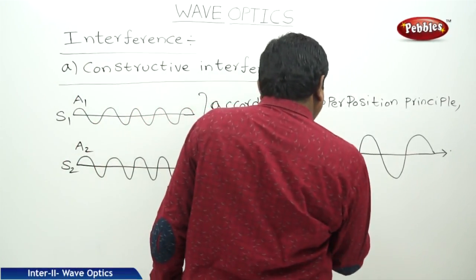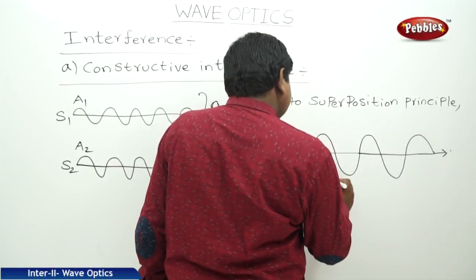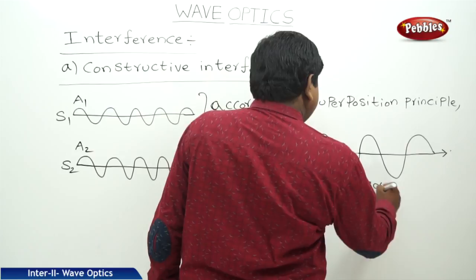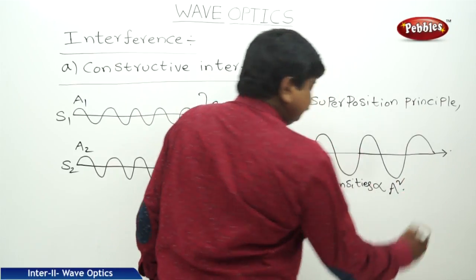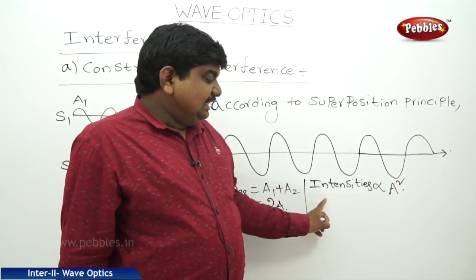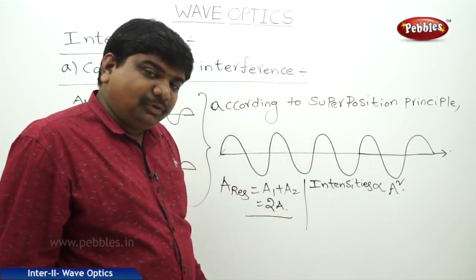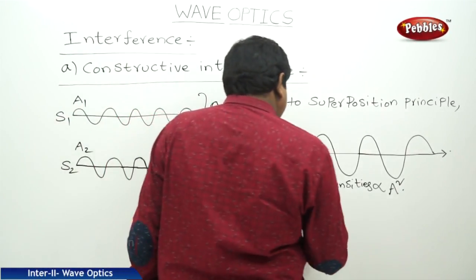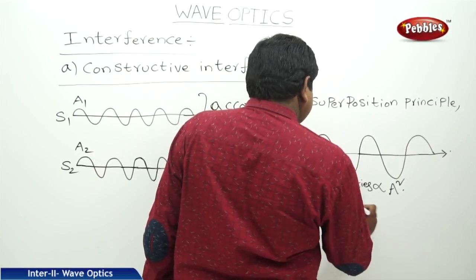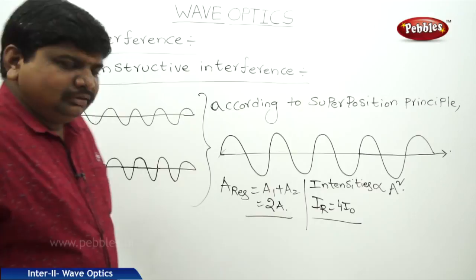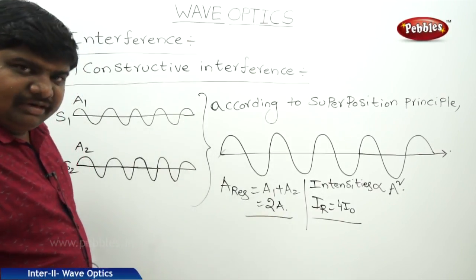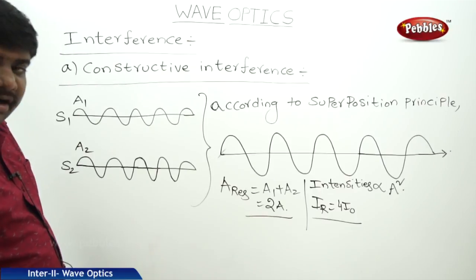What about the intensities? Intensity is proportional to A squared. So the resultant intensity is proportional to A squared. Therefore, I resultant is equal to 4I₀. This is in case of constructive interference. In constructive interference, the wavelengths, frequencies, and intensities all will be added, and both waves will be in the same direction.